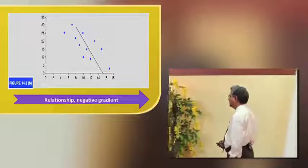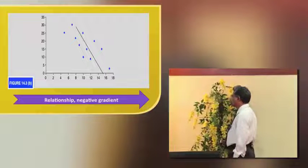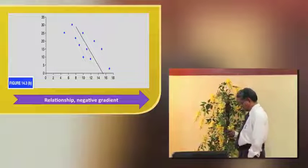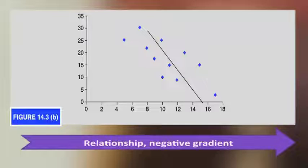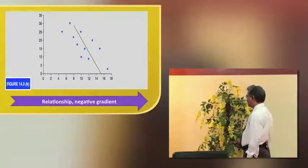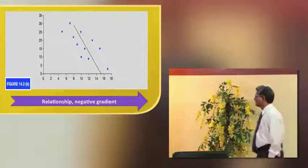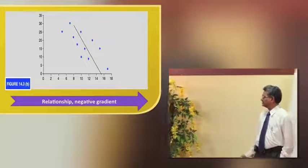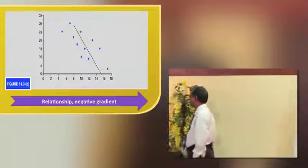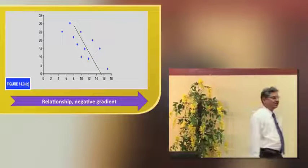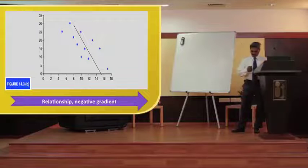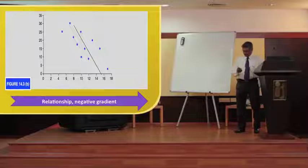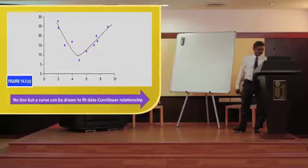Here again it is a straight line — the observations are captured by means of a straight line. The difference between this one and the earlier one is that this has a negative slope: as x increases, y is decreasing, or as x decreases, y is increasing. This is an inverse relationship with a negative gradient.